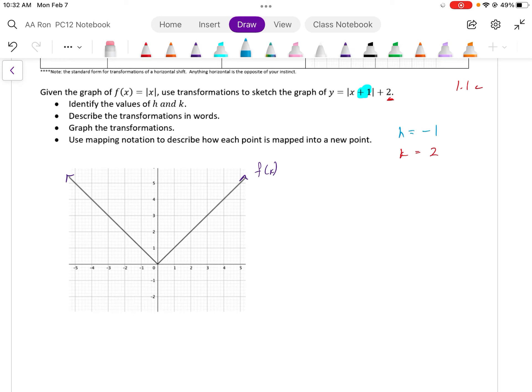So let me describe the transformation in words. When h is equal to negative 1, this implied that f(x) was shifted one unit to the left. And k being 2, this implied that the graph was shifted two units up.